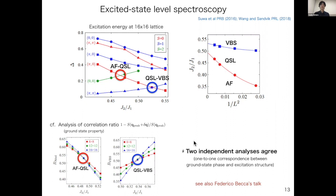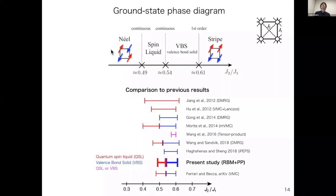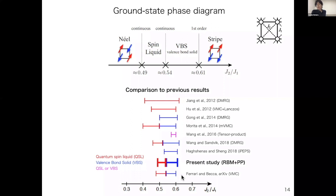This is the obtained phase diagram. Between the Néel and stripe states, we have a quantum spin liquid phase and a VBS phase, and we have determined two phase boundaries. The phase boundary between the VBS and the stripe is first order, making that point easier to determine. Comparing to previous results, Francesco and Federico also performed a similar analysis recently, and the agreement with our result is very good.